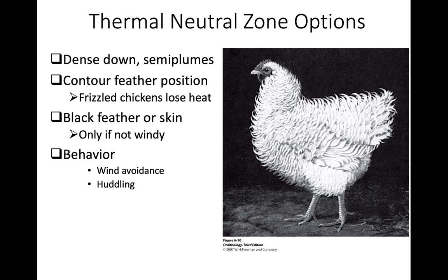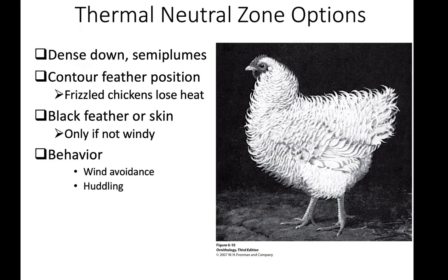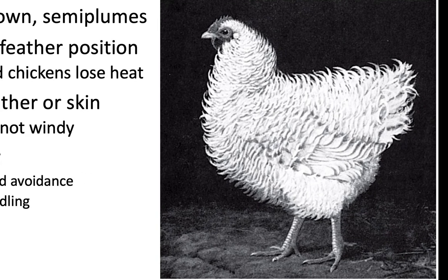By contrast, a frizzled chicken has a mutation causing contour feathers to stand up rather than lying flat. As a result, air gets through the feathers and closer to the body, so they lose much more heat than a regular chicken. While not adaptive in nature, this demonstrates the physiological role contour feathers play in heat retention.